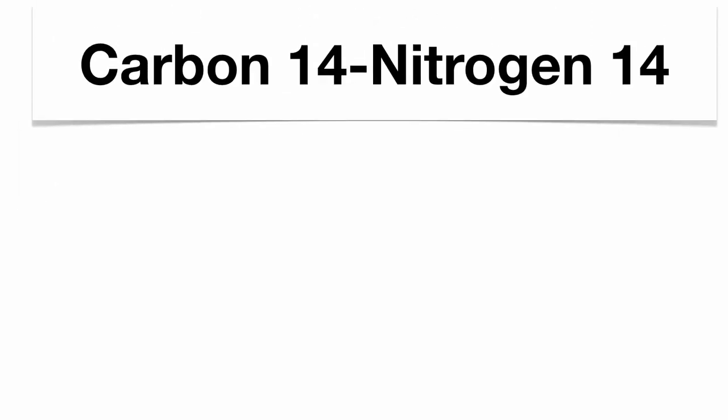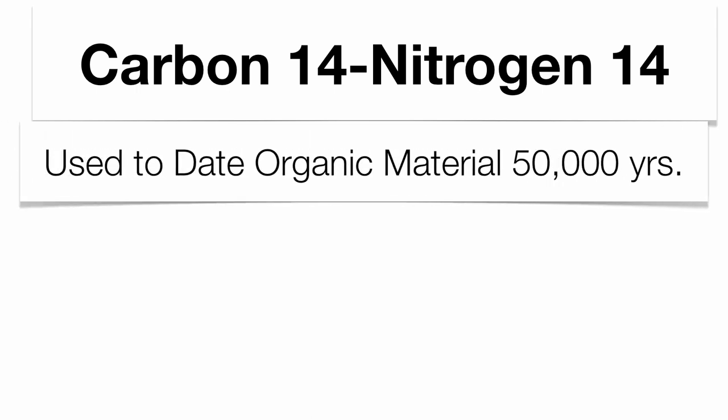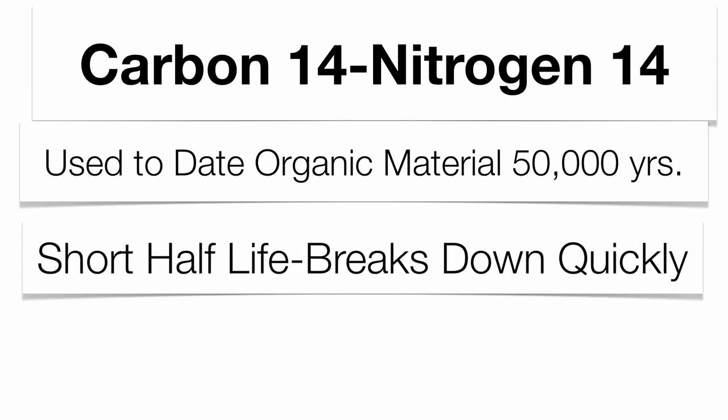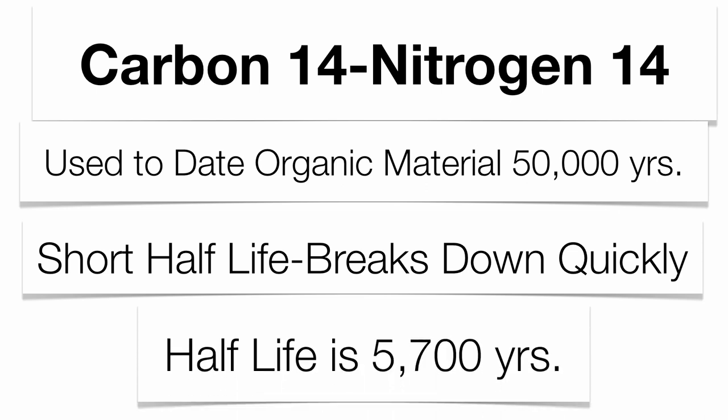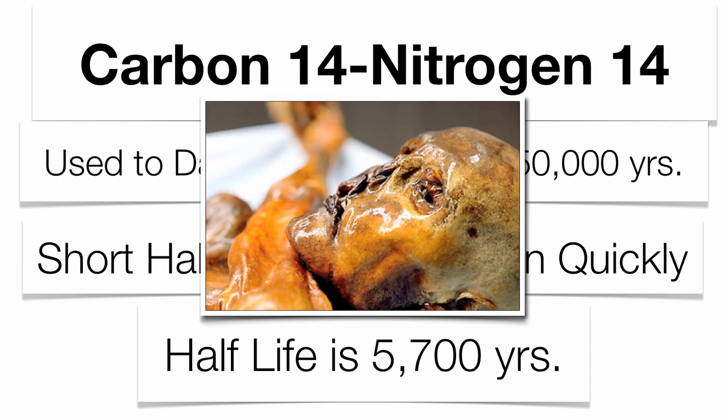For instance, carbon-14 is going to break down into nitrogen-14. What's important about this, it's going to be used to date organic material about 50,000 years old. This has a relatively short half-life and it's going to break down very quickly. Usually, because it has a short half-life of about 5,700 years, that isotope is going to be pretty much gone and pretty much non-detectable in about 10 half-lives. You can see the Iceman here would be a good example of using carbon-14 to try to date how old that specimen is.